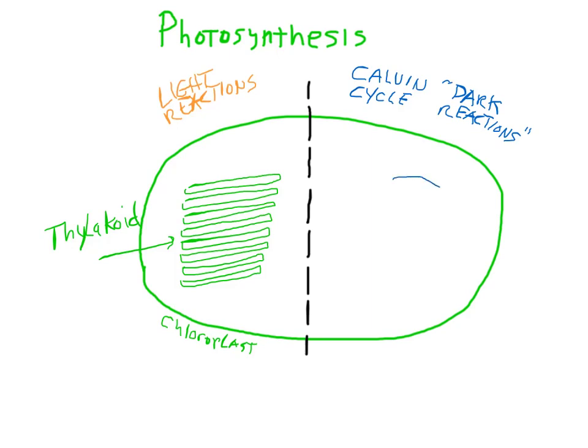On this side we are going to have a model for the Calvin cycle, which I will represent with this blue circle. This is the part of photosynthesis that makes the simple plant sugars known as PGAL. One of the main inputs to get this ball rolling is sunlight, of course, which strikes the thylakoid.